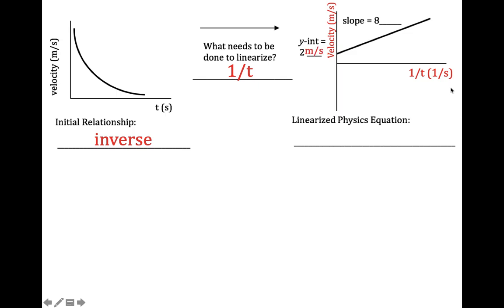The y-intercept units, meters per second. Now the slope is meters per second over one over seconds. You do your fraction algebra. It comes out to meters. And the linearized physics equation: y-axis variable, slope with units, x-axis variable, one over time, plus two meters per second, the y-intercept.